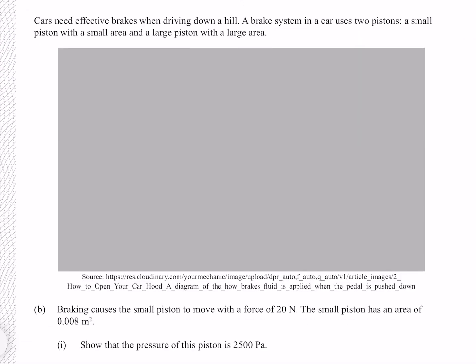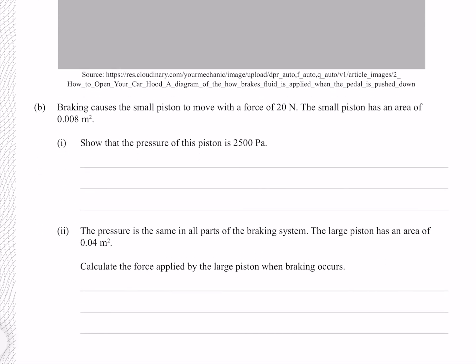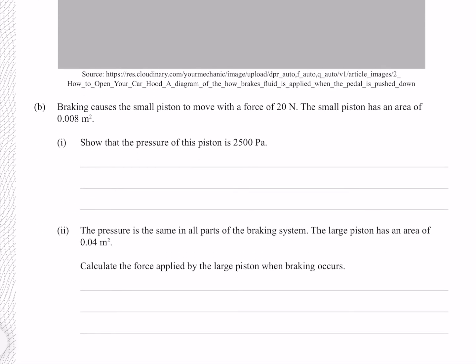Cars need effective brakes when driving down a hill. A brake system in a car uses two pistons, a small piston with a small area and a large piston with a large area. Braking causes the small piston to move with a force of 20 newtons. The small piston has an area of 0.008 meters squared. Show that the pressure of this piston is 2500 pascals. From our equation above, we know that the pressure is equal to the force divided by the area. Putting those numbers in indeed gives me 2500.